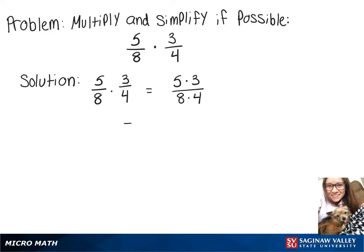5 times 3 is 15, and 8 times 4 is 32, so we'll end up with 15 over 32.